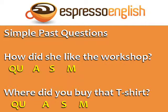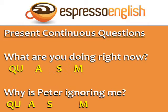Questions in the simple past also follow this pattern: 'How did she like the workshop?' and 'Where did you buy that t-shirt?' For questions in the simple past, the auxiliary verb is 'did'.